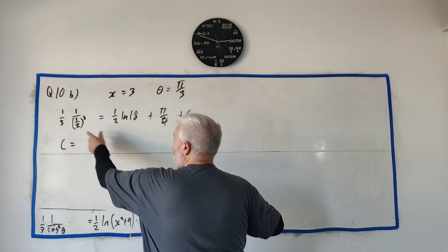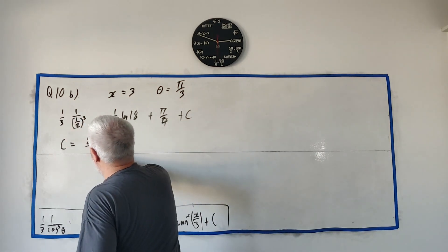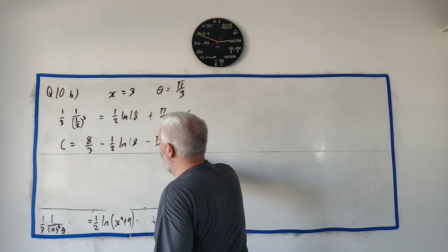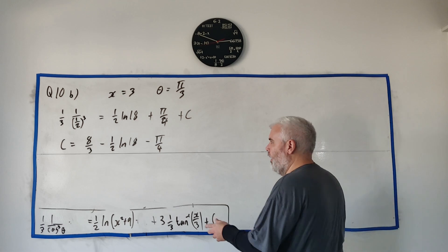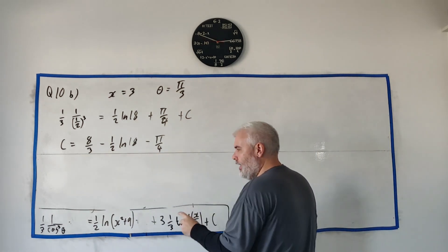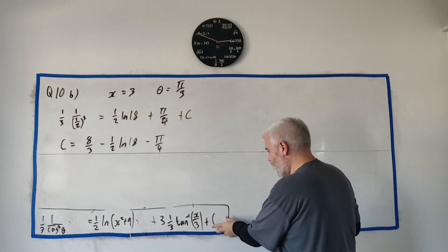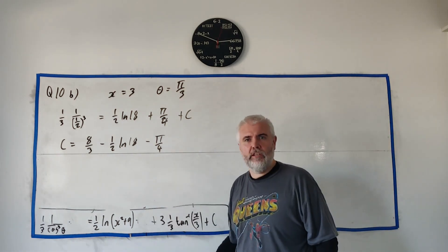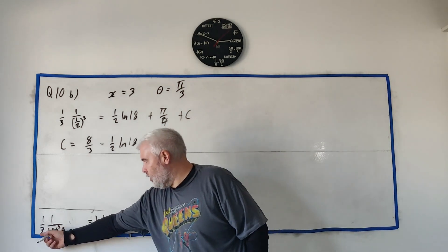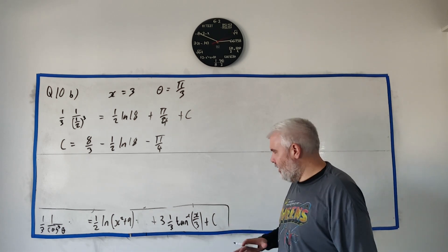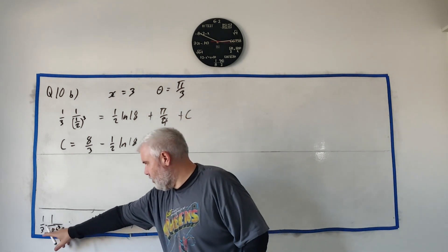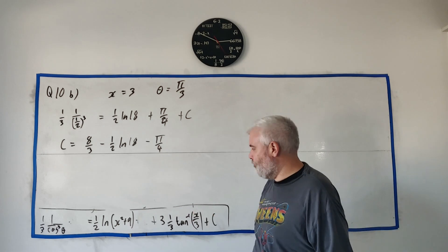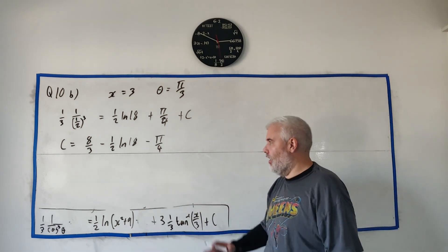Nothing can be cleaned up much. We rearrange to get c equals 8 over 3 minus 1 over 2 natural log 18 minus pi over 4. Looking at my notes, I have 3 times this, 3 times this, 3 times this, because I multiplied everything by 3 and have 3c instead of c. You can get different c's at this point. I had constant 1, 2, and 3 added together, but you could have multiplied by 3. You'd really get either this or this multiplied by 3. It'll all come good in the end.